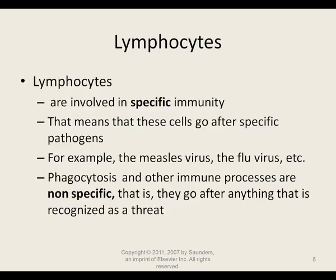We want to focus on lymphocytes since they are involved in specific immunity. This means those cells go after specific pathogens — the measles virus, the flu virus, etc. Phagocytosis and other immune processes are nonspecific; that is, they go after anything that is recognized as a threat.